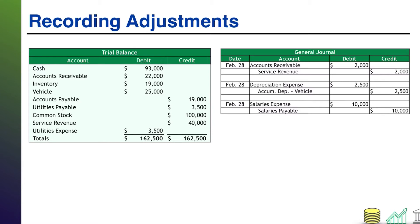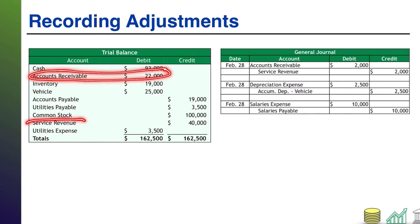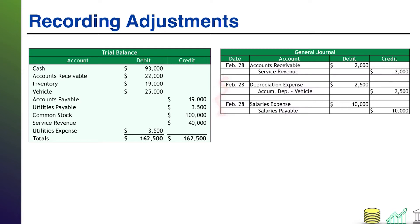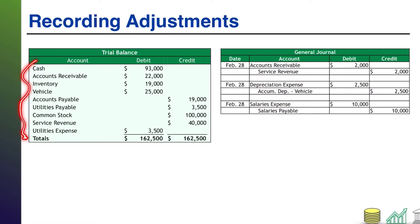Notice on these adjusting entries, some accounts used already existed in the trial balance — for instance, accounts receivable and service revenue. We already have accounts receivable and service revenue sitting here, so for these accounts the new activity is just going to tag on to the existing balances. Notice for some of the others — depreciation expense, accumulated depreciation, salaries expense, and salaries payable — none of those show up on our original trial balance, so we are going to have to start new ledgers to track their information and then add them into our trial balance.